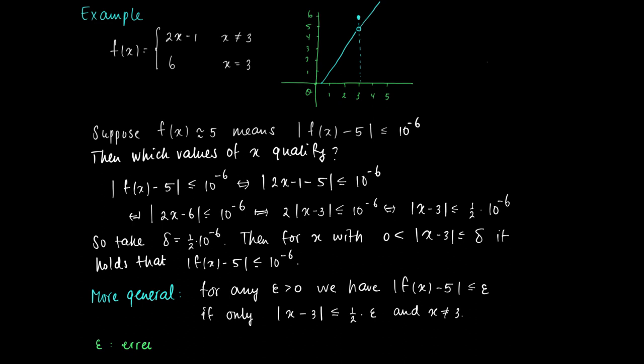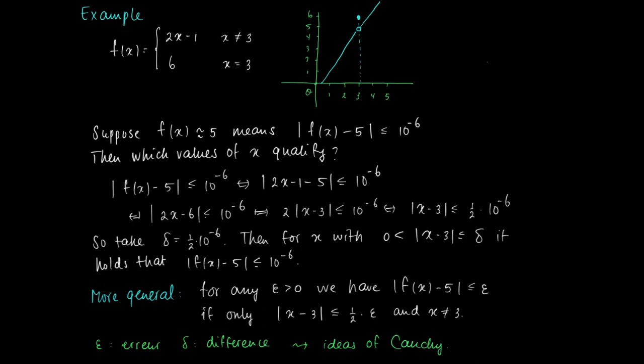You might wonder where epsilon and delta come from. These are ideas due to Cauchy. Cauchy regarded epsilon as the error term — the right-hand side so that |f(x) − 5| can be at most some error epsilon — and delta is called the difference, meaning the distance from x to the supposed limit point.